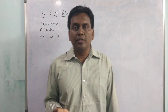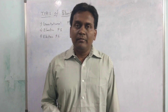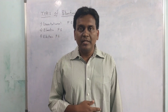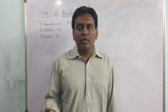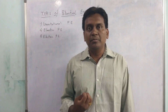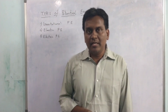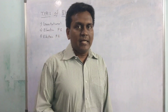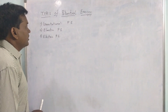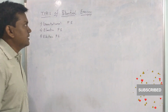It depends upon the position of the body mainly. For example, a compressed spring possesses potential energy, a block which is hanged to a string possesses potential energy, and an overhead tank possesses potential energy. Coming to the types, we have three types: gravitational potential energy, elastic potential energy, and electric potential energy.